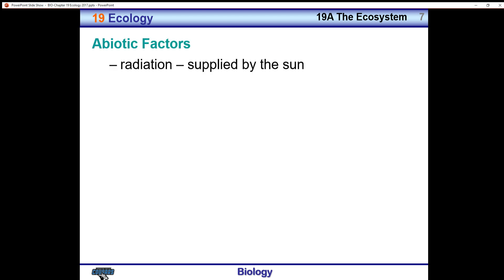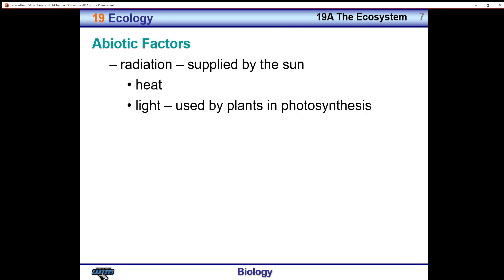Let's look at the abiotic factors in more detail. An ecosystem experiences radiation from the sun, which provides heat and ultimately affects the temperature of an area. The amount of light is used by plants to carry on photosynthesis, in which they produce sugars that will support life. Another abiotic factor is the atmosphere — depending on altitude, the density or pressure of the atmosphere will affect that biosphere.